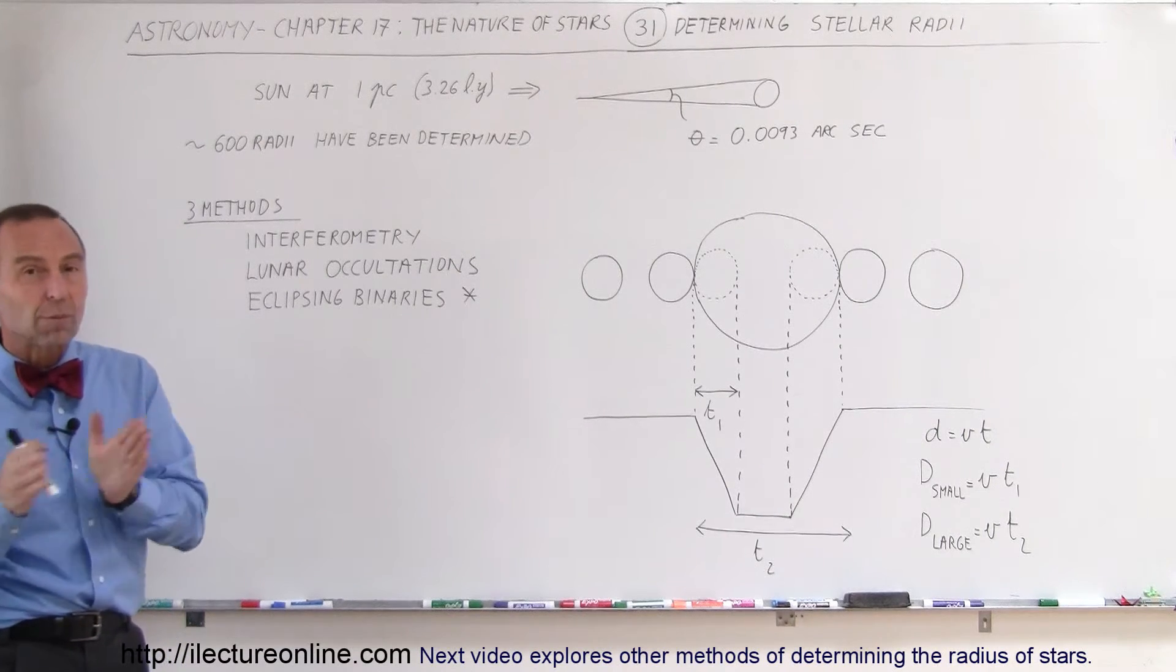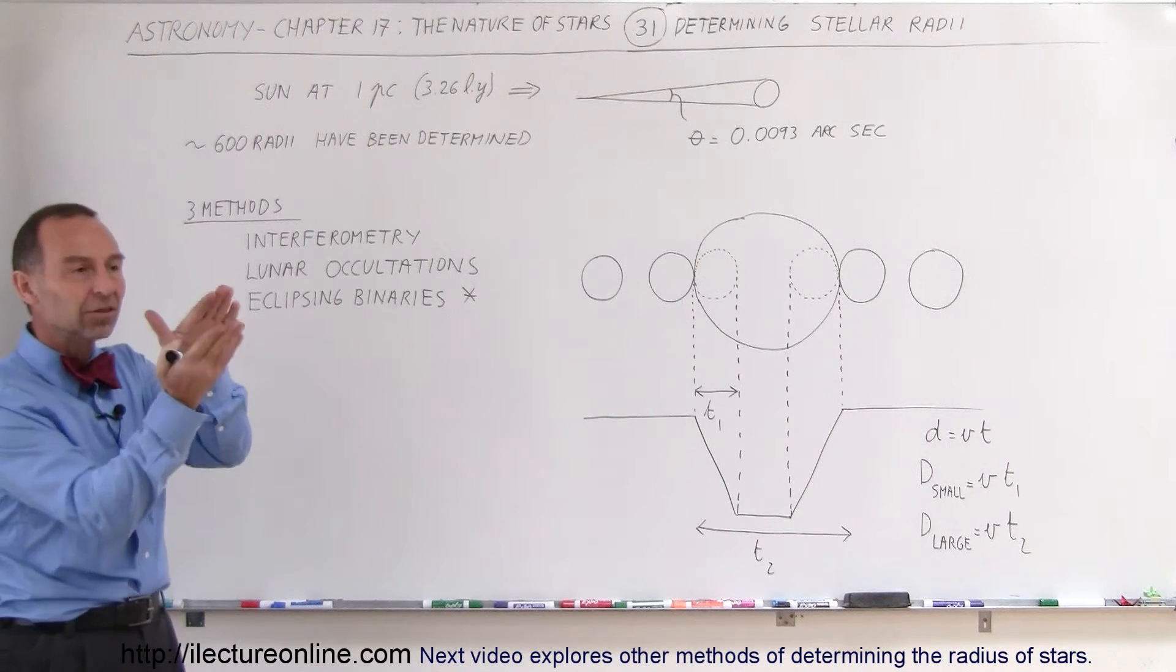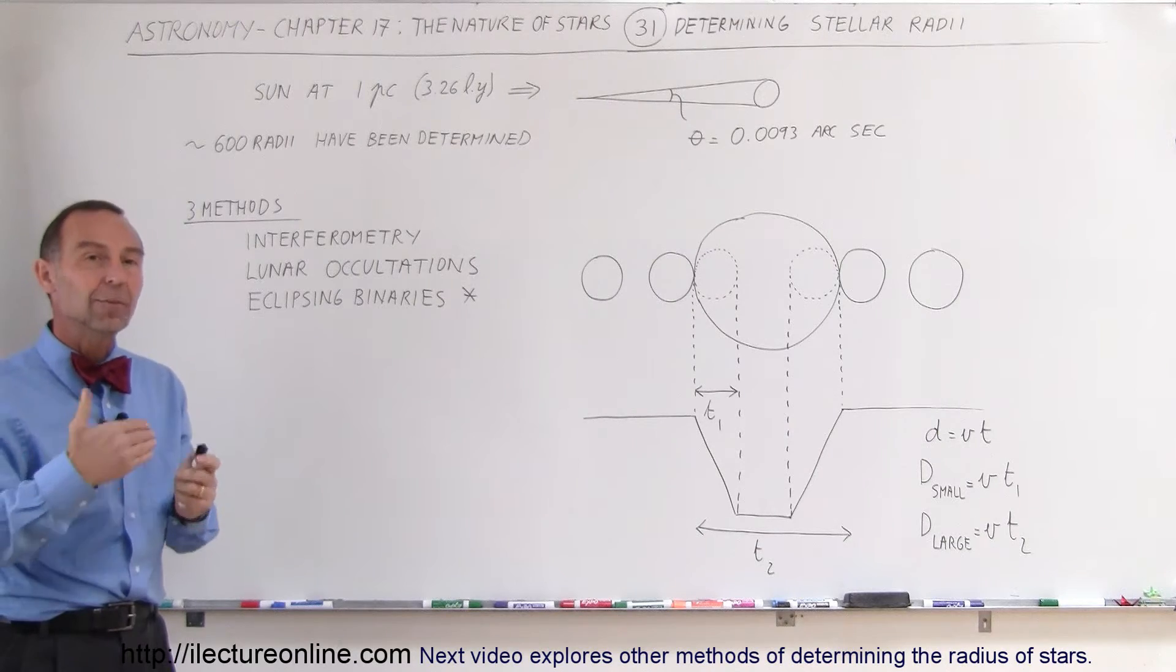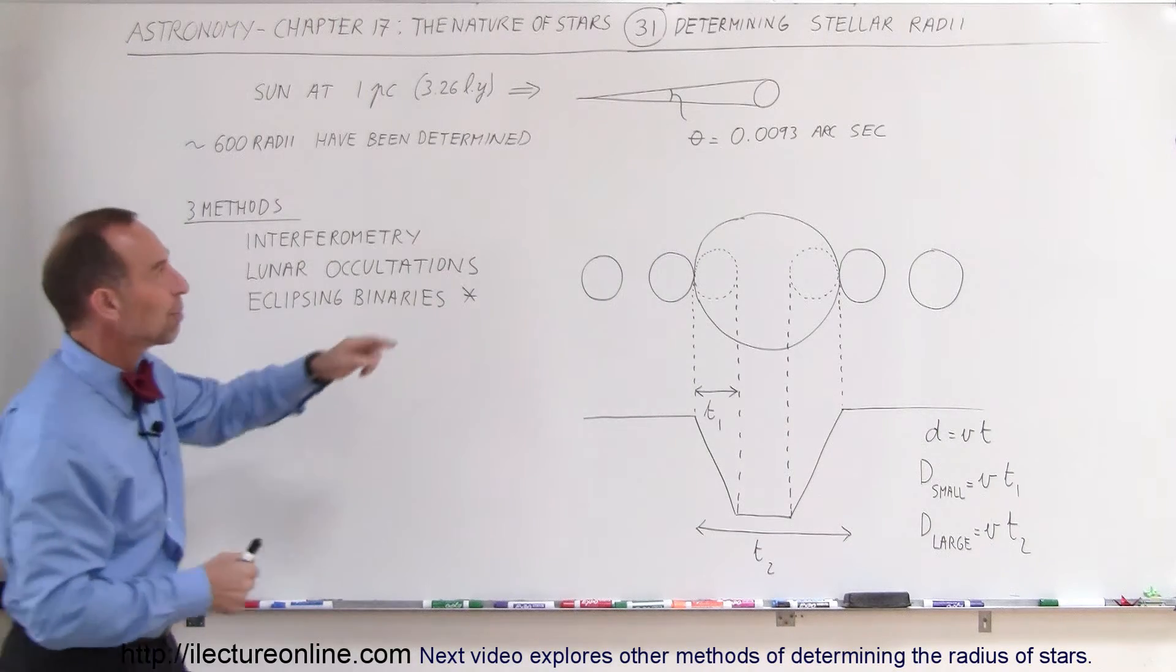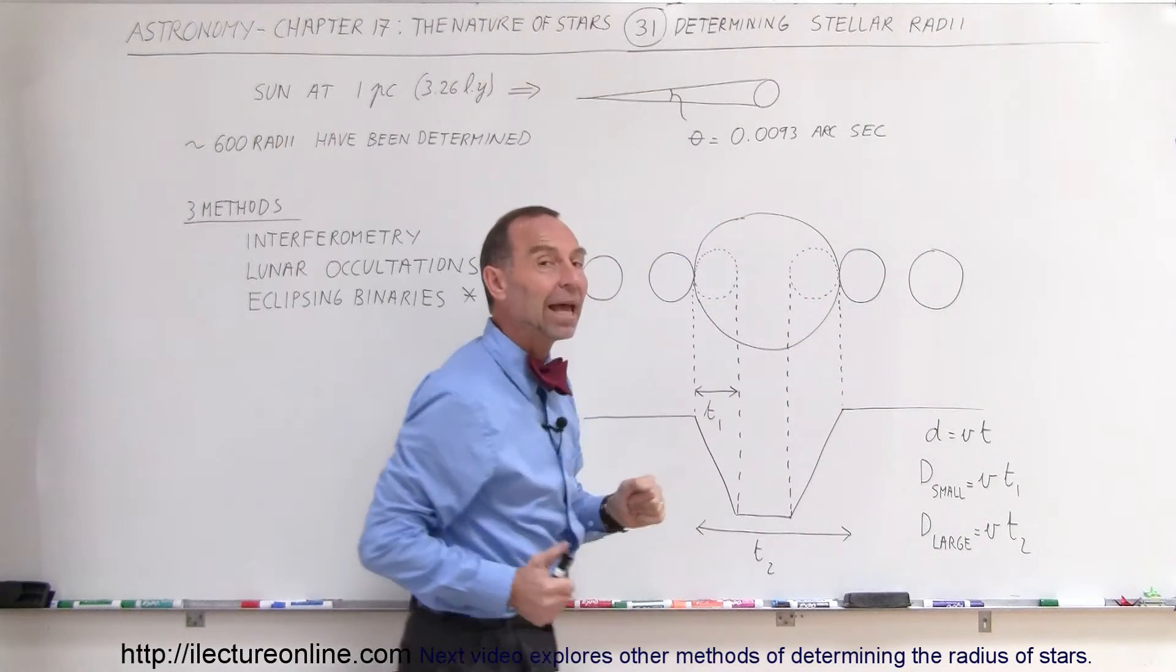And of course, in the universe when we measure things, we tend to measure things in terms of angular size. How big does it look? Like the moon is about a half degree in angular size. If you measure the moon from the top to the bottom, it makes up a half a degree.